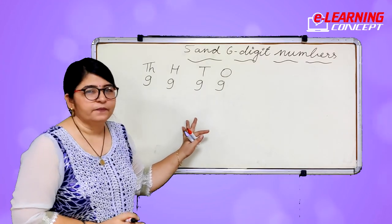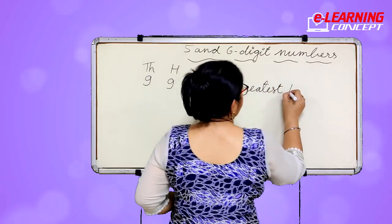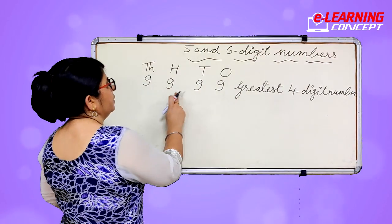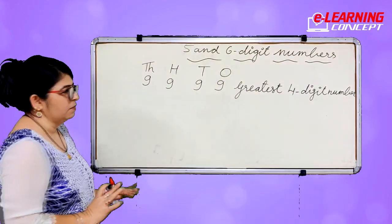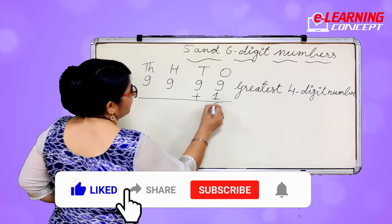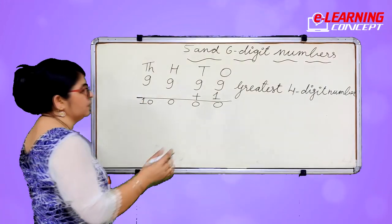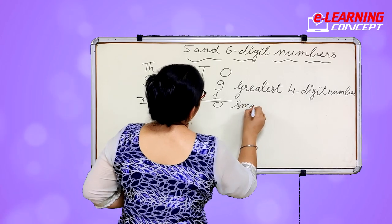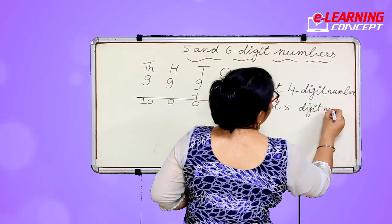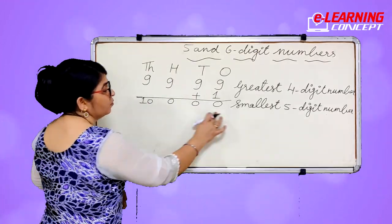9999 is the greatest 4 digit number. If we add 1 to this number, what will happen? This is the smallest 5 digit number. See: 1, 10, 100, 1000, 10,000 — there are 5 digits.